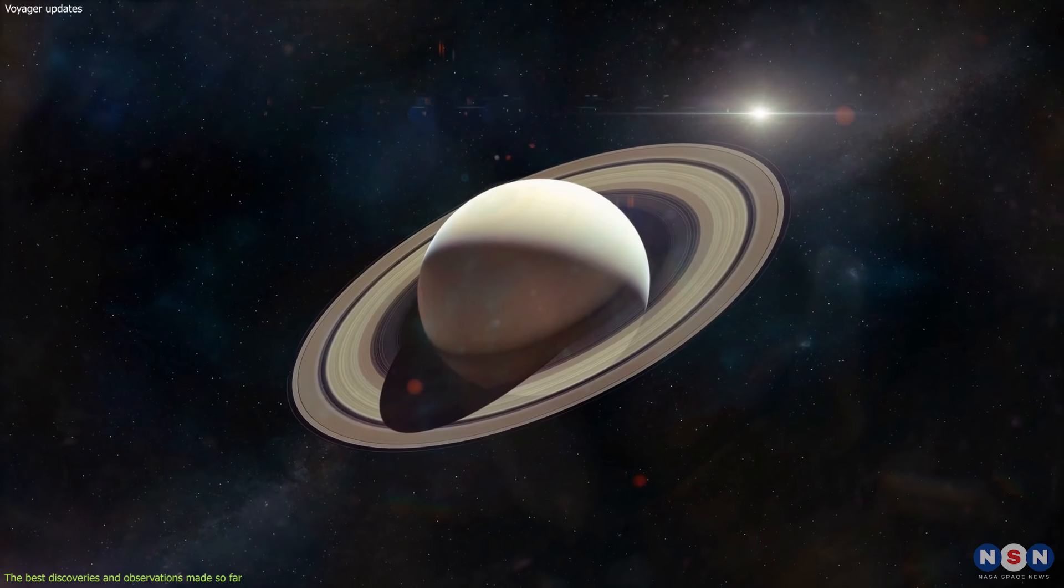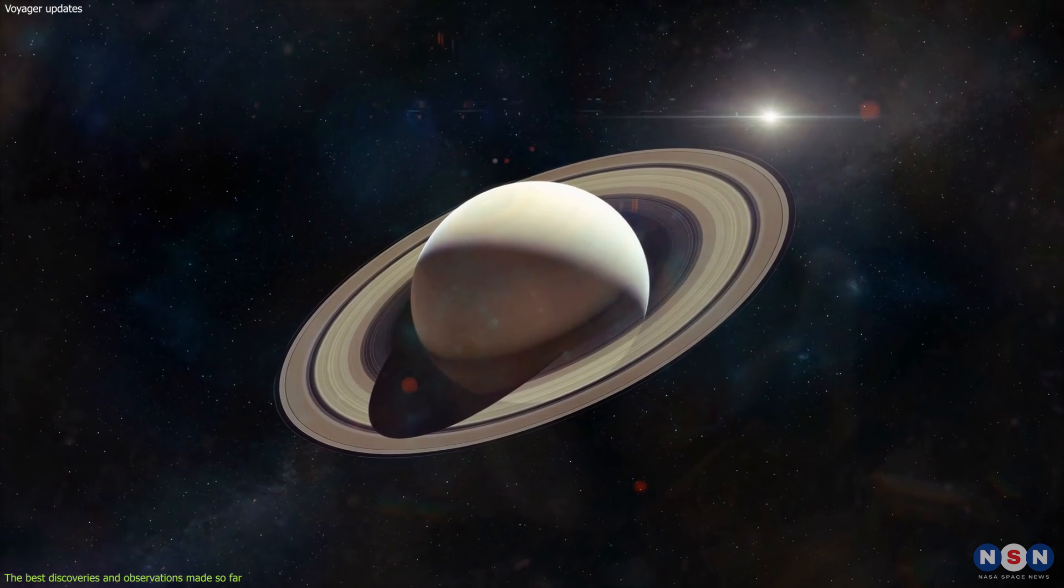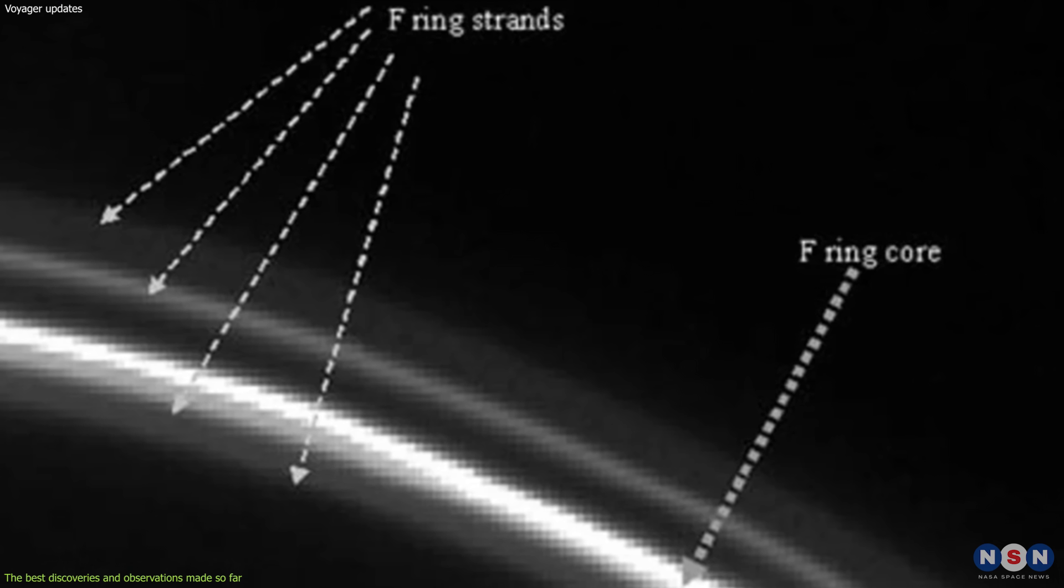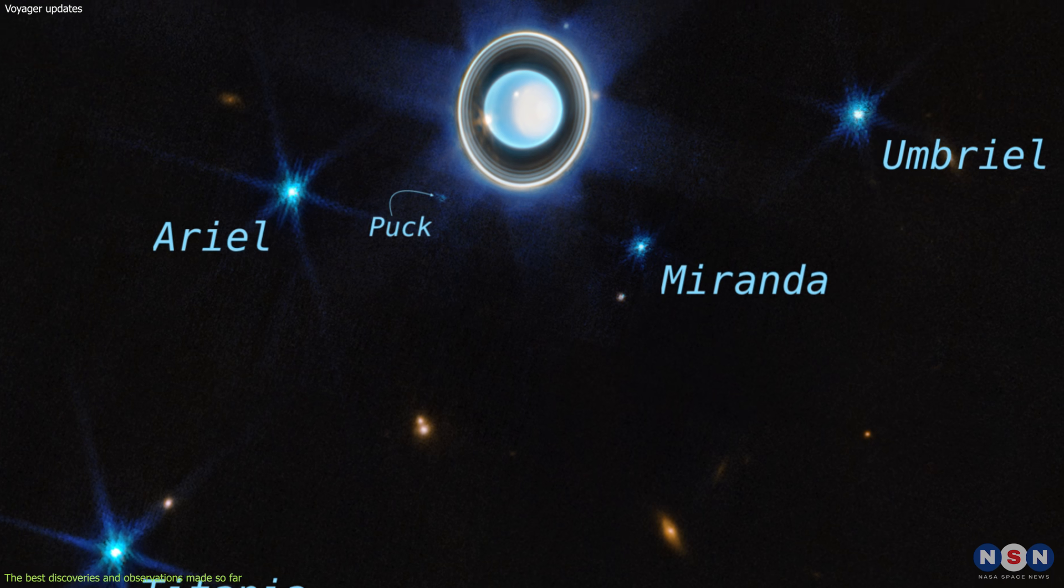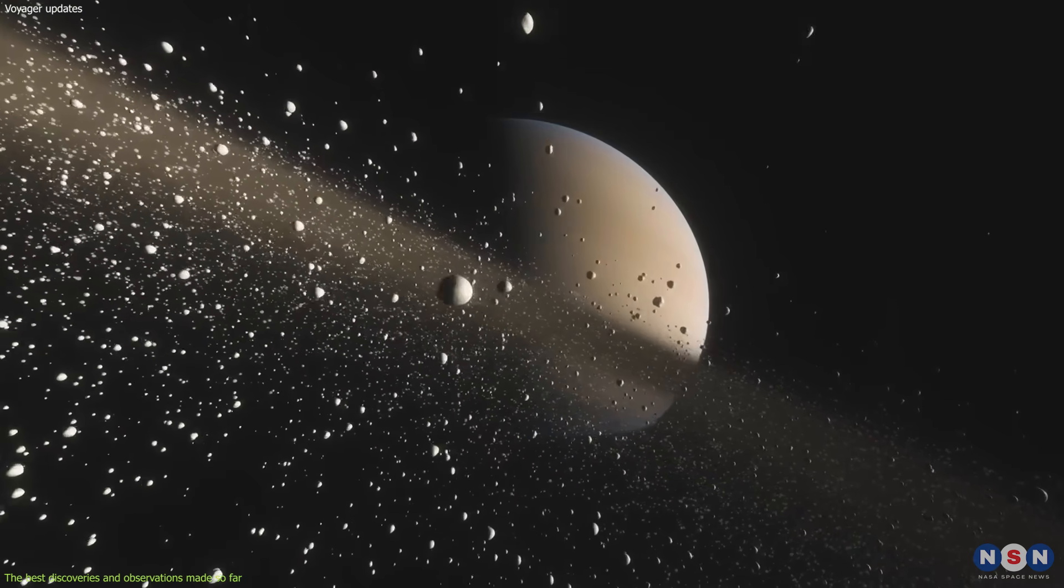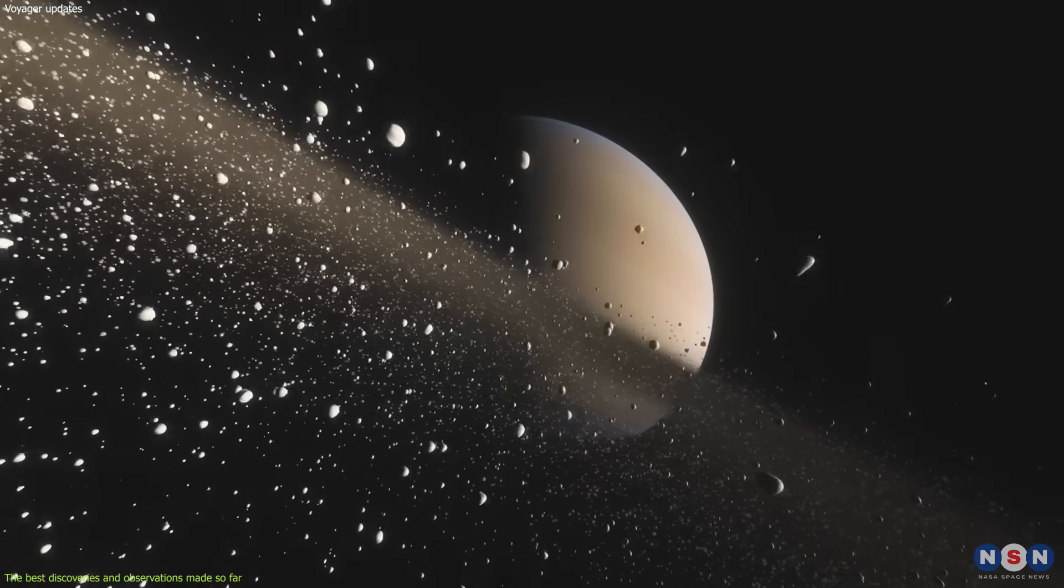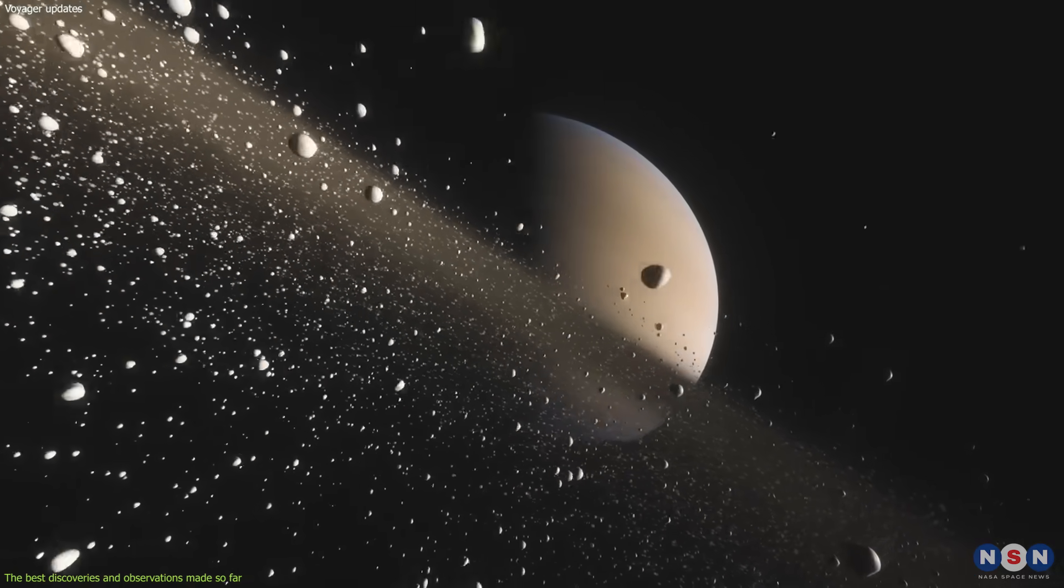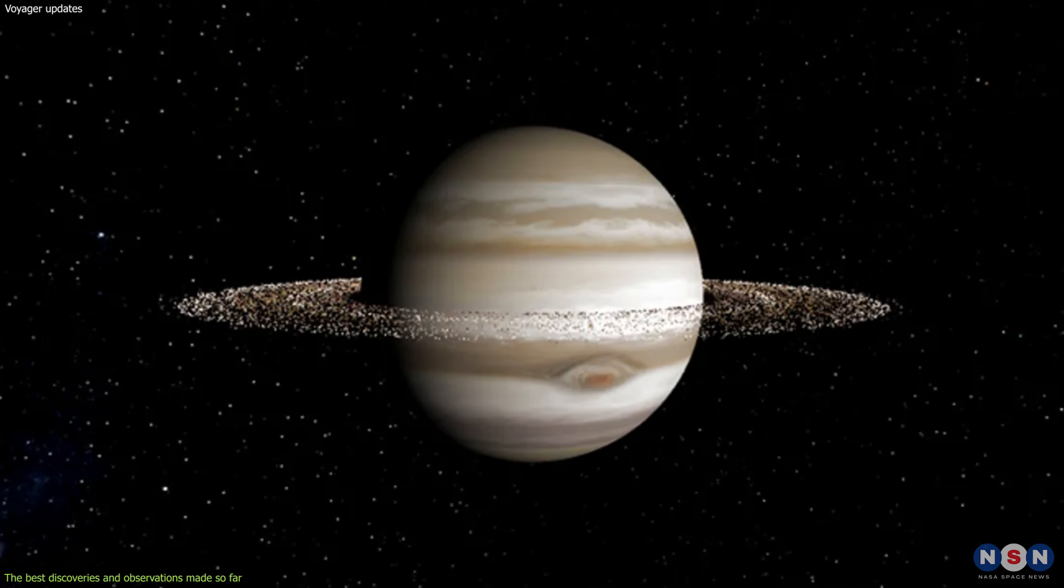They revealed the diversity and complexity of the planetary rings, such as the braided ring of Saturn, the shepherd moons of Uranus, and the clumpy ring of Neptune. These rings are made of dust, ice, and rocks that orbit around the planets. They are shaped by gravity, collisions, and magnetic fields.